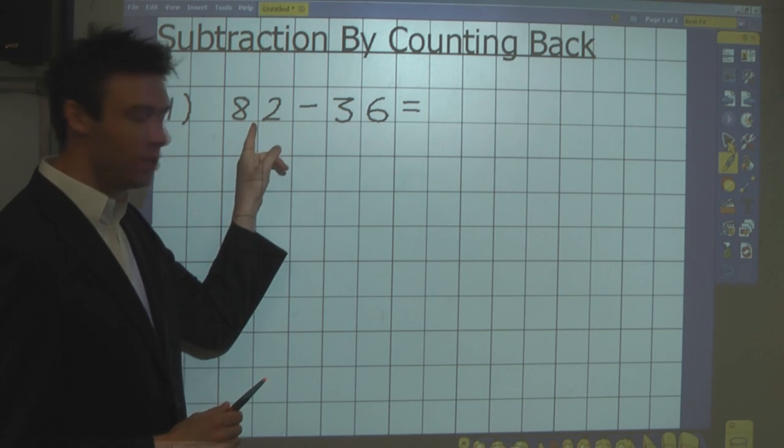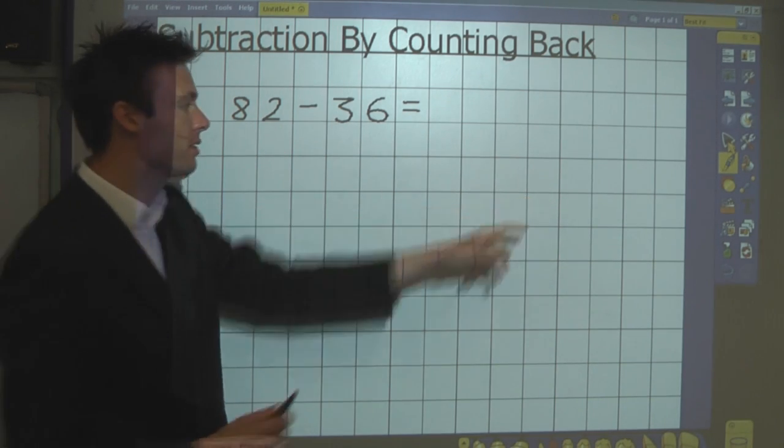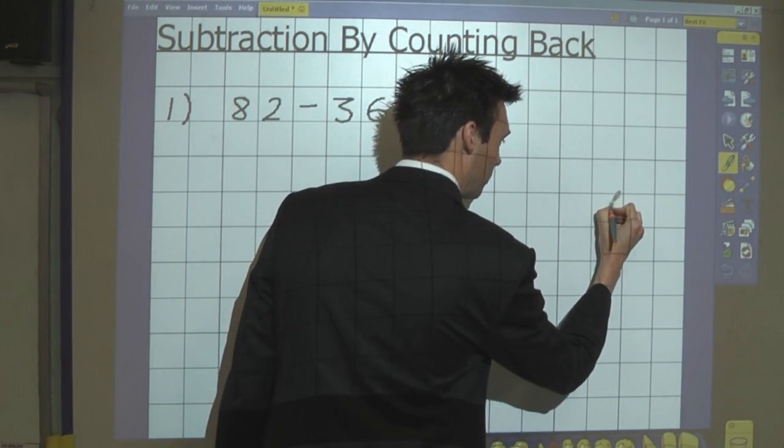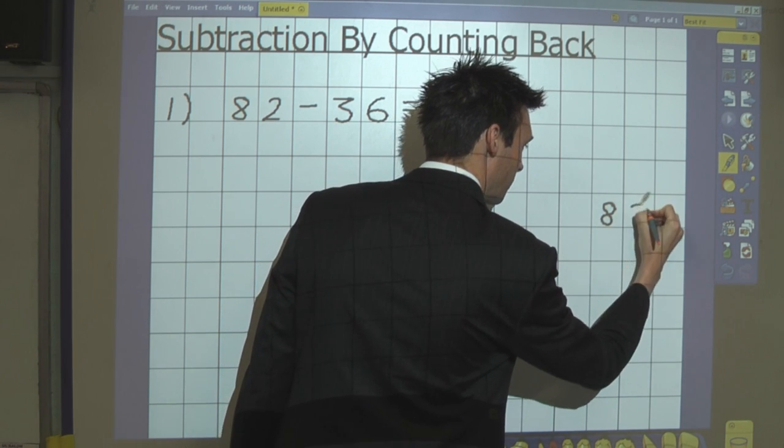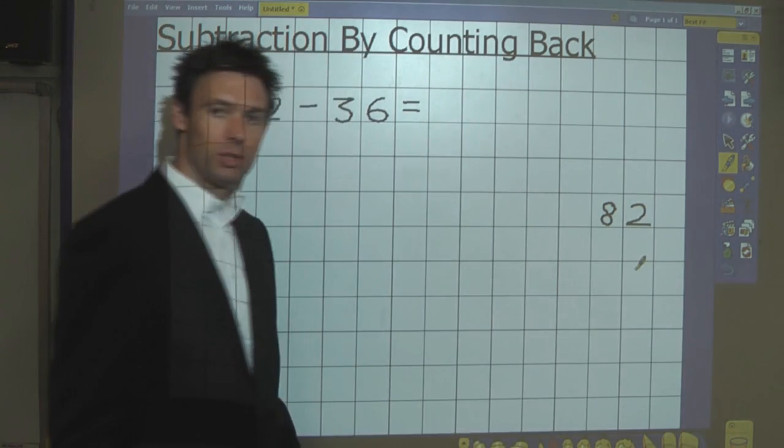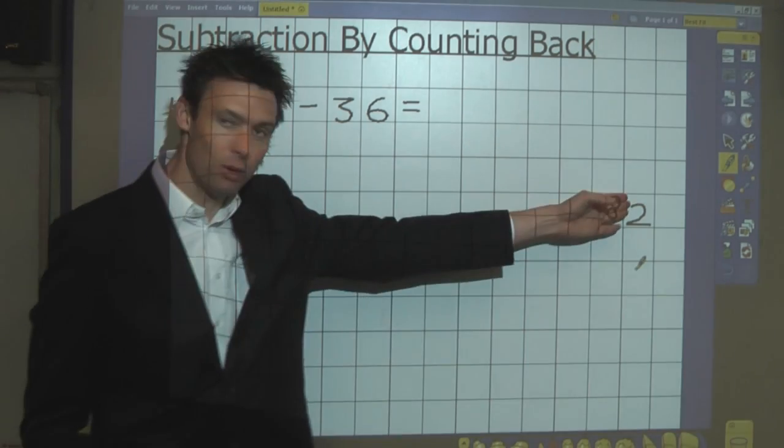So I start by writing 82 over on the right-hand side. Because I'm going to be subtracting, I'm going to be taking away,